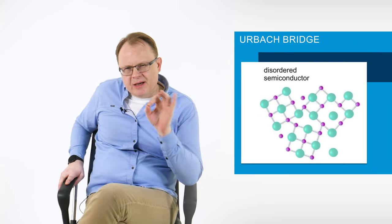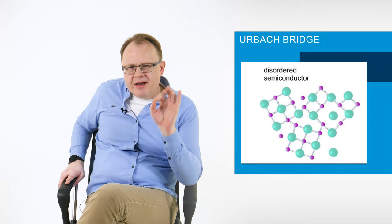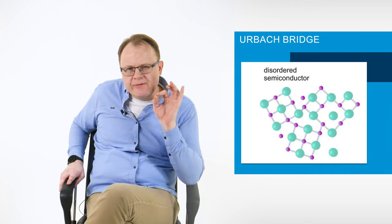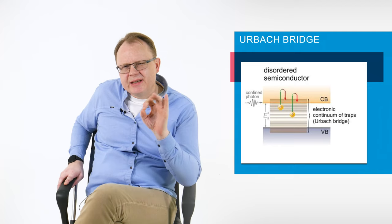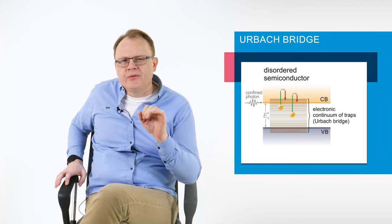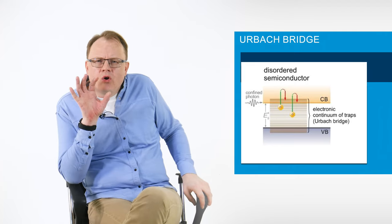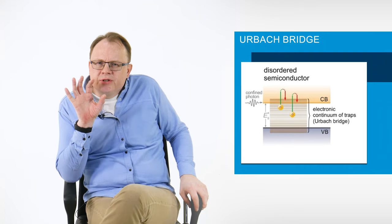Defects in semiconductors underlie the excess electron levels within the forbidden gap, forming the so-called electronic continuum, often referred to as the Orbach bridge. The Orbach states can lead to extraordinary spectroscopic features of solids, which will be discussed below.